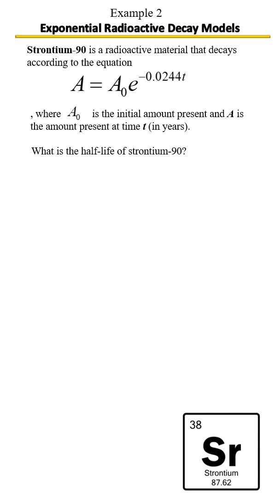Strontium-90 is a radioactive material that decays according to the given equation, where a₀ is the initial amount present and a is the amount present after a certain amount of years t. So what is the half-life of strontium-90?